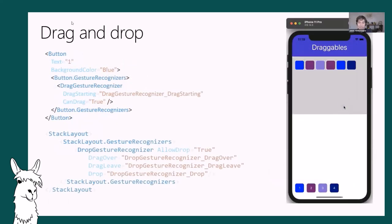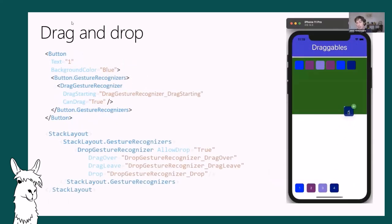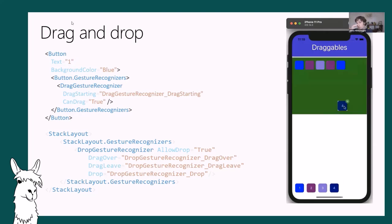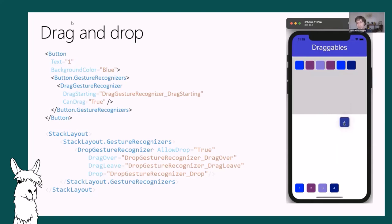Drag and drop is an awesome feature. You can drag and drop inside your existing application or across applications. If you're building for dual-screen devices like the Surface Duo, it automatically integrates into the dual-screen system. Built-in drag gestures, ability to specify drag gestures and drop zones, and Xamarin Forms knows how to react automatically for images and text.